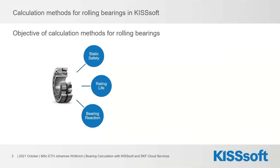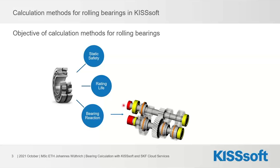When we talk about bearing calculations, I think there are three fundamental objectives. The first is static safety, which tells us whether our bearing will withstand a certain load with regard to permanent deformation. The second is rating life. The third, especially relevant to KISSsoft users, is bearing reaction — knowing how our bearing is going to operate in a specific arrangement.